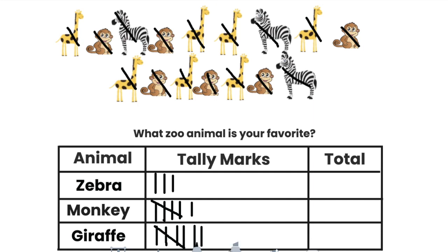Okay Rockstars, it looks like we've completed drawing our tally marks. Now let's go over here and write the total. I see I have one, two, three people who voted for zebra. Then I have five, six people who voted for monkeys. And I have five, six, seven people who voted for giraffes.